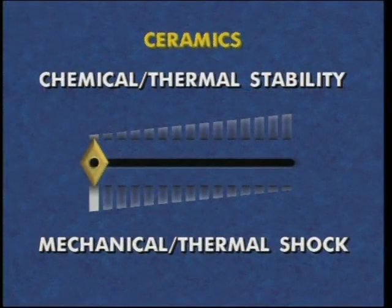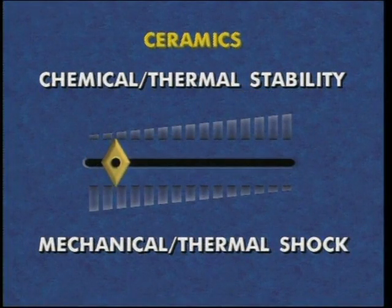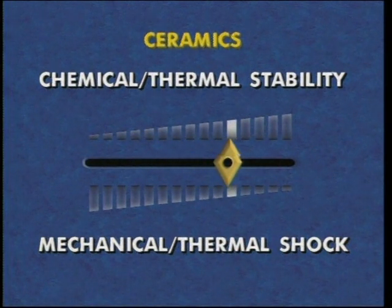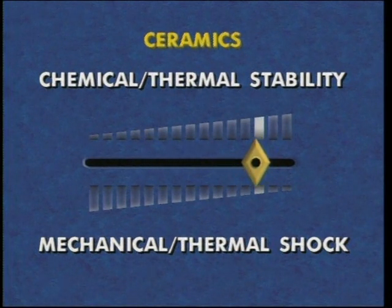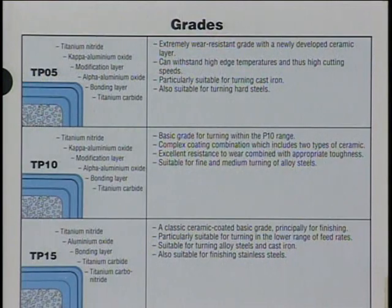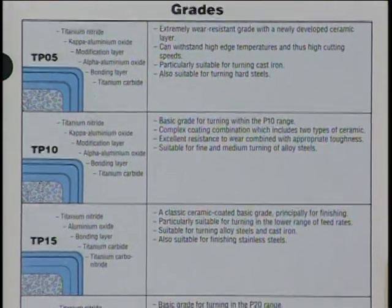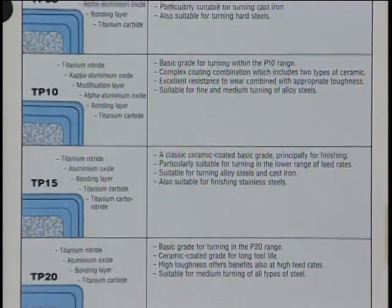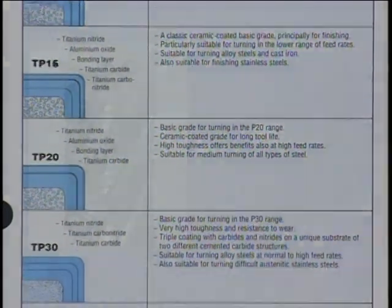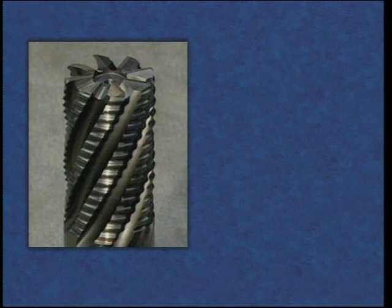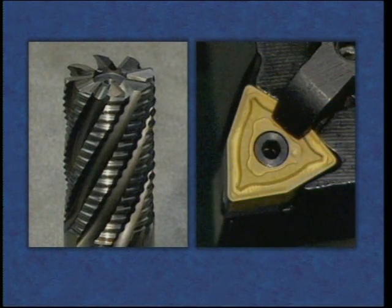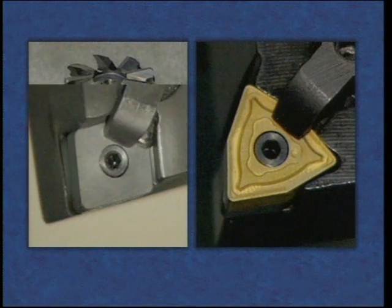For example, materials with excellent chemical and thermal stability, such as ceramics, tend to be brittle, with limited resistance to mechanical and thermal shock. These variable properties take place both within a material class, such as different grades of carbide, as well as when comparing different classes of tool materials, such as high-speed steel and carbide, or carbide and ceramics.